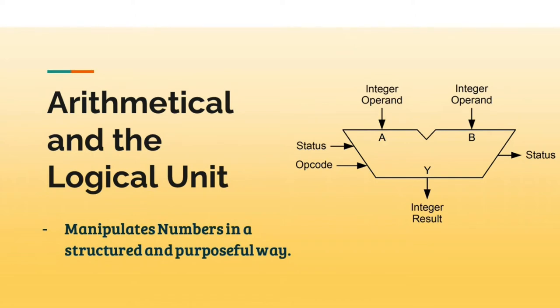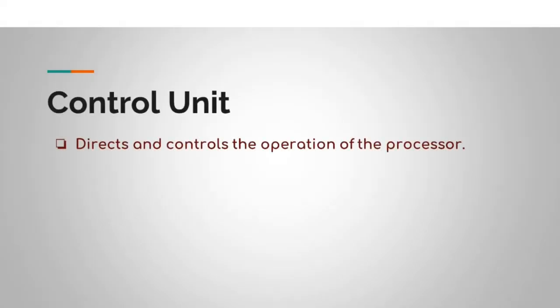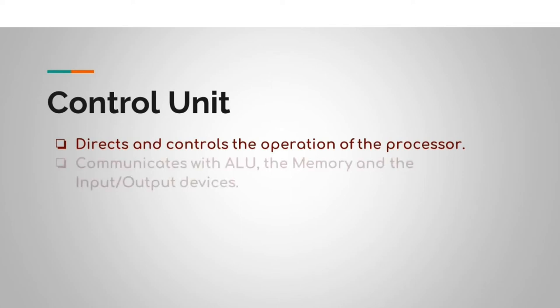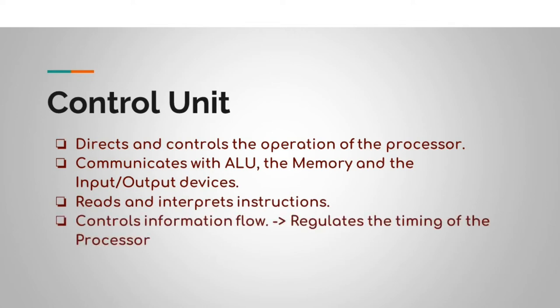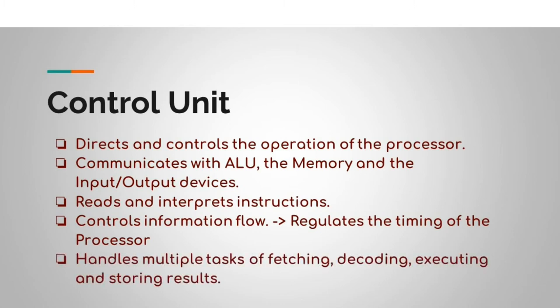As we have learned, computers understand instructions in combinations of zeros and ones. Since everything is expressed in numbers, the arithmetic and logical unit becomes crucial. Next up is the control unit. The control unit directs and controls the operation of the processor. It constantly communicates with the arithmetical and logical unit, the memory and the input-output devices, telling them what to do. The control unit reads and interprets instructions, controls information flow from various devices of the computer, and regulates the timing of the processor's working. It handles multiple tasks of fetching, decoding, executing and storing results, and is indispensable to the working of a computer.